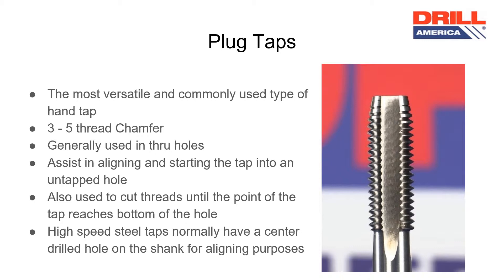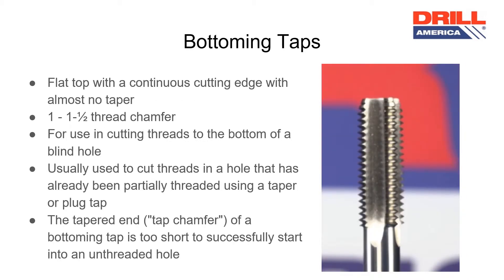High speed steel taps normally have a center drilled hole on the shank for aligning purposes. Bottoming taps have a flat top with a continuous cutting edge and almost no taper, just 1 to 1 and a half thread chamfer.